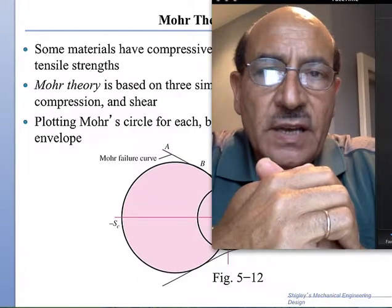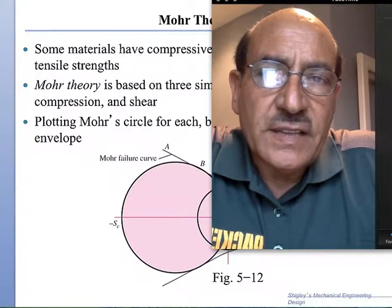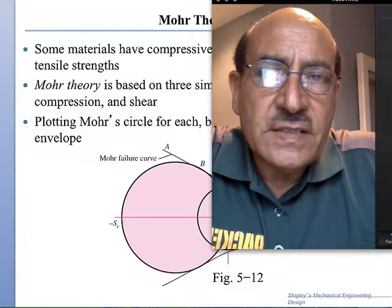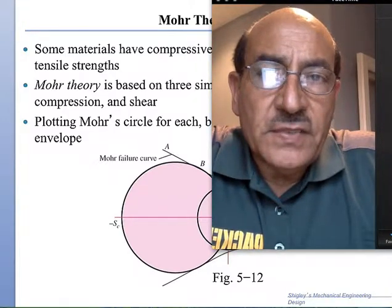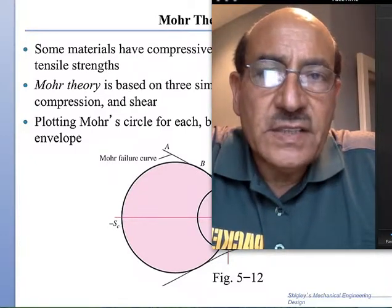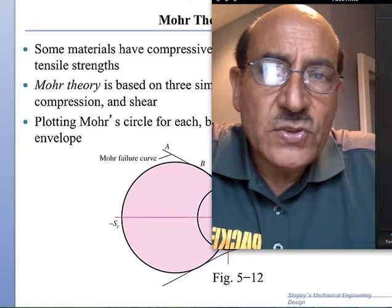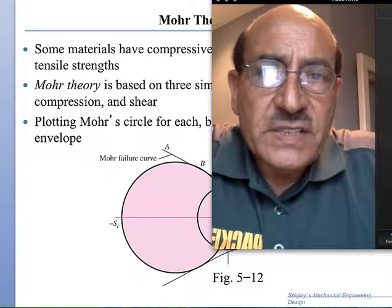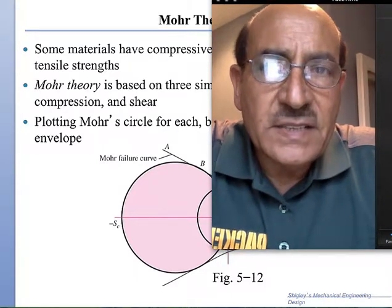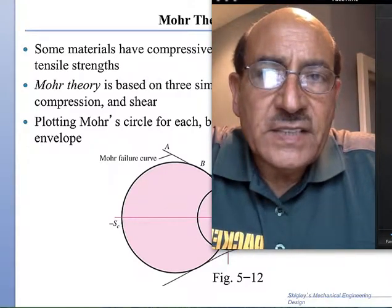As we referred to earlier in the previous lecture, brittle materials are characterized by a yield strength in tension that could be vastly different from a yield strength in compression. For example, concrete can be loaded to a much larger load in compression than in tension. So in brittle materials — cast iron is another example, as are ceramic materials — we need to make a modification to the failure criteria we discussed so far.